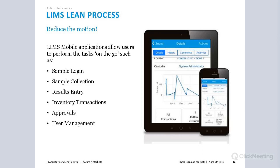A lean laboratory is one focused on processes, procedures and infrastructure to deliver results in the most efficient way in terms of cost and speed. The lean process is derived from the concept of lean manufacturing pioneered by Toyota in the 1940s, but it's still relevant today. The goal of a lean laboratory is to reduce resource usage and costs while improving productivity, staff morale and laboratory-driven outcomes. There are eight typical laboratory wastes defined in the lean process, often described as downtime.